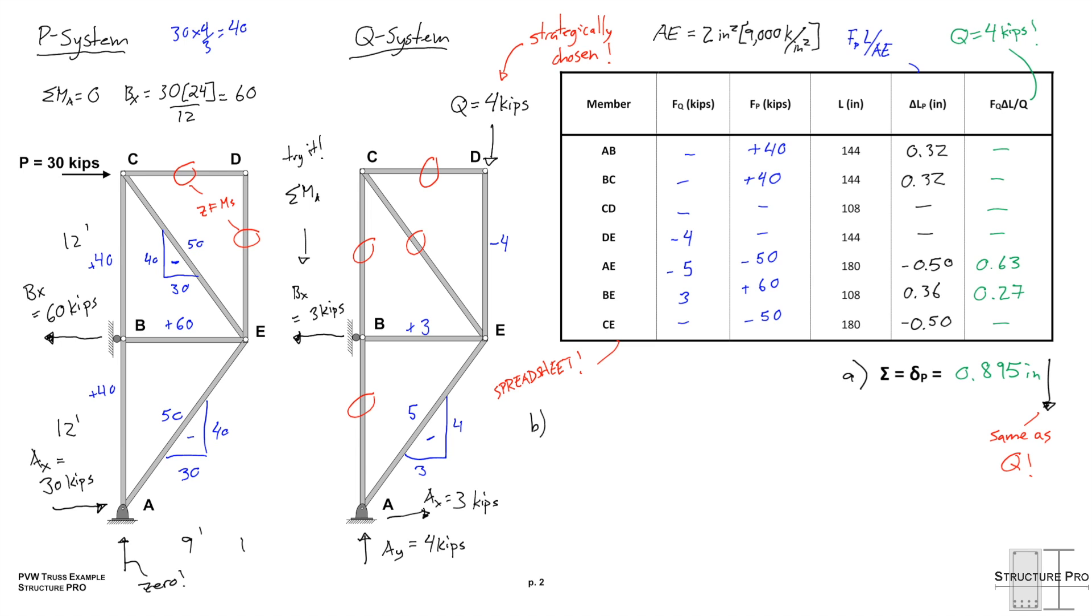Moving on to part B, where we were going to take away all the external forces and only have a fabrication error on bar AE of 8 fifths of an inch. And recall we were asked how far to the right must support B move to ensure that there is no vertical deflection at D. We already have the Q system corresponding to the vertical deflection at D.